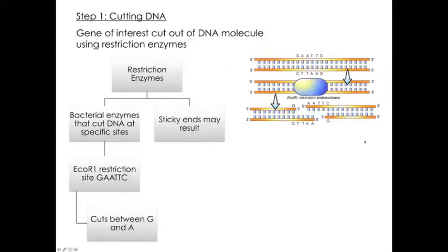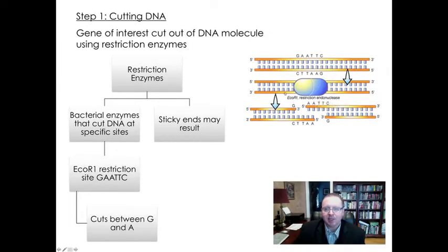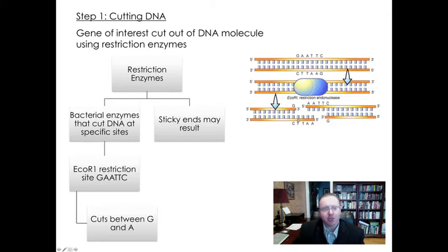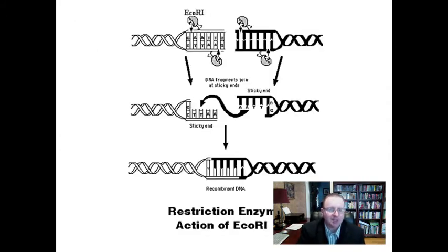We saw in that animation how the restriction enzyme ECO-R1 cuts its DNA at the restriction site GAATTC, and the cut is made so that the two strands have overlapping or overhanging free nucleotide sequences called sticky ends — that's very important. So the first thing that happens is we isolate our gene of interest. In the experiment you saw earlier, the gene of interest was the frog ribosomal RNA gene — it could be the gene that codes for insulin in human beings. We're going to cut that out of its native DNA molecule. Here you can see the ECO-R1 enzyme recognizing its restriction site, cutting between the G and the A, producing sticky ends on the two molecules, and then they can be rejoined.